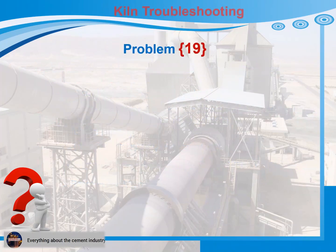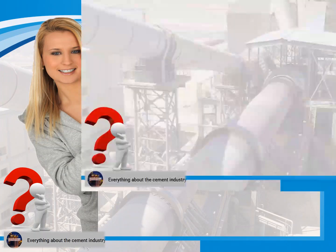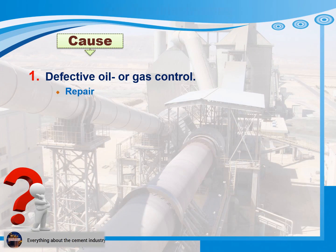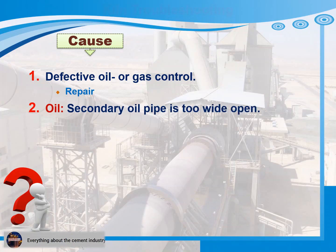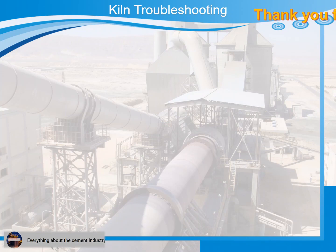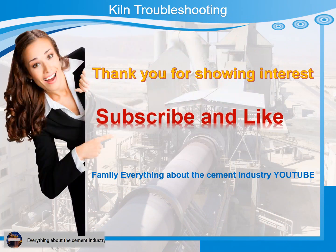Problem 19: Reduced pressure of oil or gas of the firing system. Cause 1: Defective oil or gas control. Recommendations for action: Repair. Cause 2: If oil is used, secondary oil pipe is too wide open. Recommendations for action: Close secondary oil valve. Cause 3: The cone was shifted too far or was deformed. Recommendations for action: Retract or adjust the cone. Thank you for showing interest. With family greetings — everything about the cement industry. I hope for your support by subscribing to the YouTube channel.